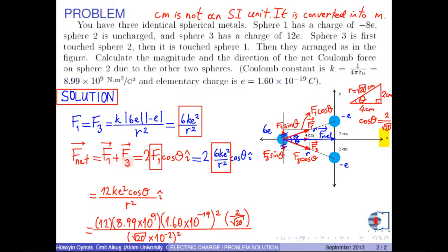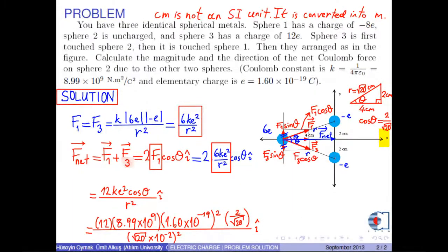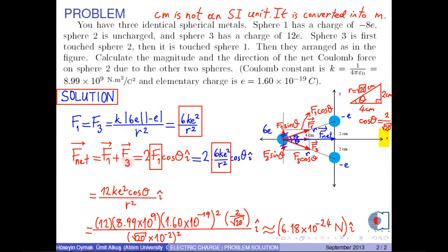Finally, we add the direction of the F net as i hat. As a result, the calculation gives 6.18 times 10 to negative 24 N in the positive x direction.